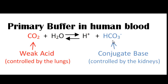The kidneys will control the bicarbonate ion, which will also affect the pH. If there's an increase in bicarbonate ion, that will cause a drop in H+. A drop in H+ will create an alkaline or basic environment, therefore a higher pH. If there is a decrease in the bicarbonate ion, that will create an increase in hydrogen ion concentration and the pH will decrease.